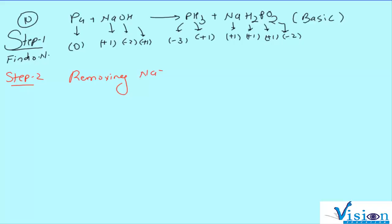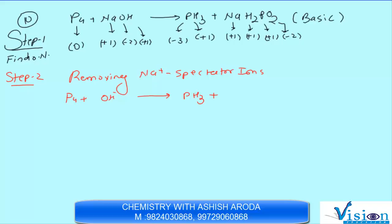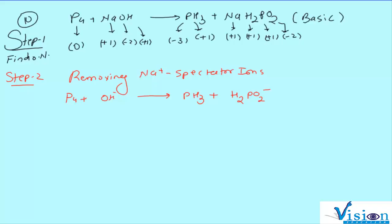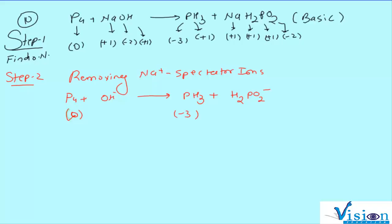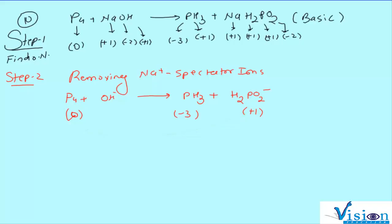Na⁺ spectator ion है। Removing them, हमारा reaction बन जाएगा: P₄ + OH⁻ gives PH₃ + H₂PO₂⁻. P का oxidation number: यहाँ 0 है, यहाँ minus 3 है, और यहाँ plus 1 है। Again यह disproportionation है — oxidation और reduction दोनों साथ-साथ हो रहे हैं, same phosphorus पर।